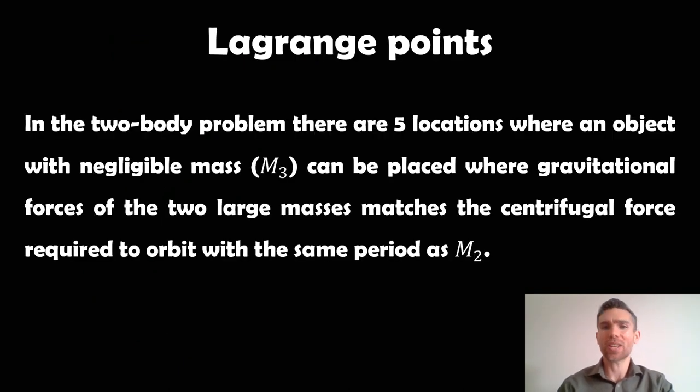And to do that, we need to go to the Lagrange points. If you haven't come across this before, I have a couple of other videos that will go into more detail. But just briefly, if you've got a two body system, so the two body problem, there are five locations around those two bodies.